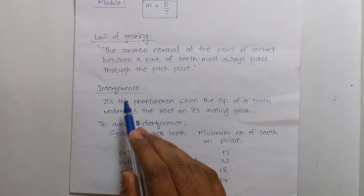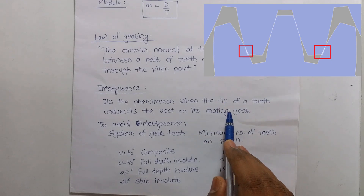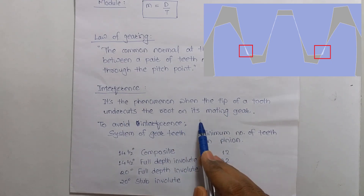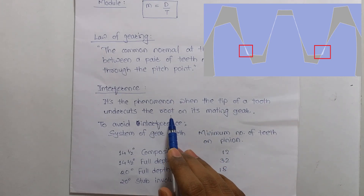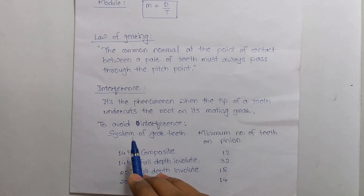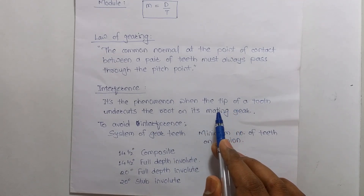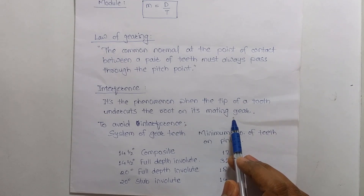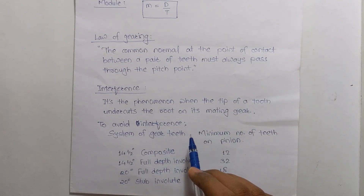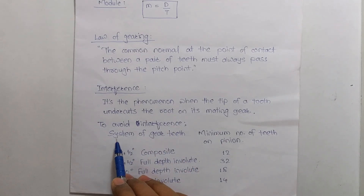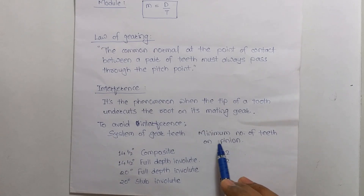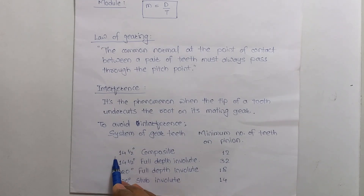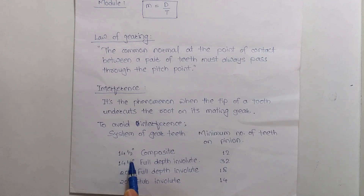Interference is the phenomenon when the tip of a tooth undercuts the root on its mating gear. It is an undesirable phenomenon and must be avoided. To avoid interference, a proper system of gear teeth is used and a minimum number of teeth on the pinion is specified.